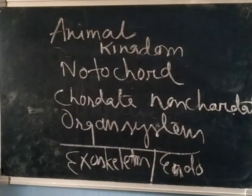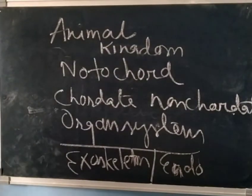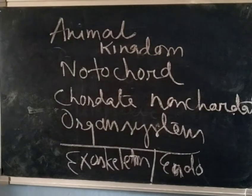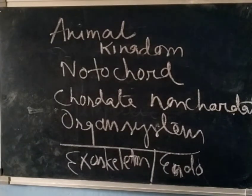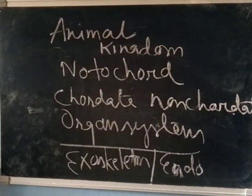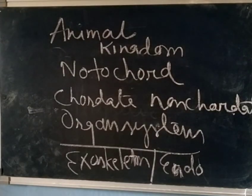Animals can be hermaphrodite, bisexual, or unisexual. Asexual and sexual reproduction can be seen, and both external and internal fertilization are possible. This is the basis of certain criteria on which the animal kingdom is divided into many phyla and classes, which we will discuss in the next class covering invertebrates. Please read and bring your doubts to the online class.